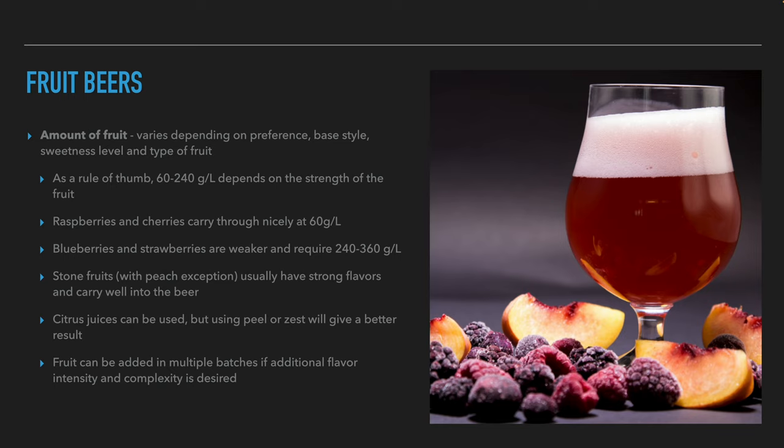With citrus fruits, brewers can use the juice, but using only the peels or zest usually gives better results. If the brewers want more complexity and intensity, they can add the fruits in several phases rather than all at once.